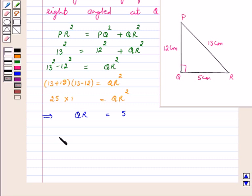Now tan P is equal to side opposite to angle P, that is QR, upon side adjacent to angle P, that is PQ, and this is equal to 5 over 12.